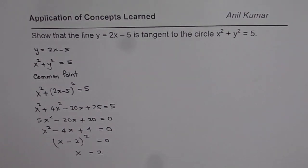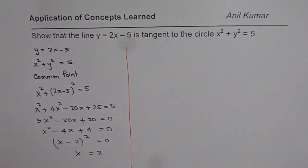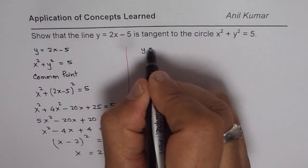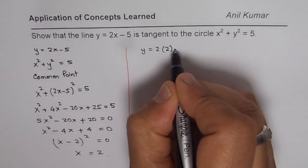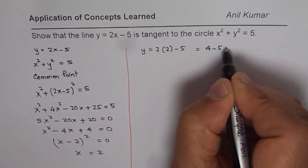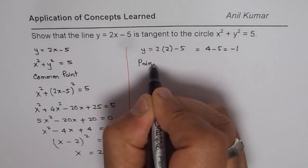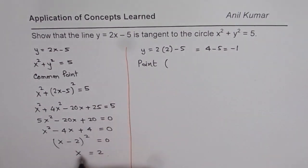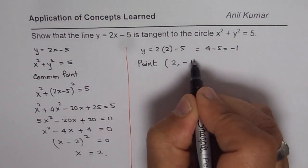So when you solve for x, you should also find the value for y. So we will just find the value for y also. So y is equal to 2 times x, x is 2 for us. We will substitute 2 minus 5, and that gives you 4 minus 5 as minus 1. So that point of tangency for us is x value of 2 and y value of minus 1.